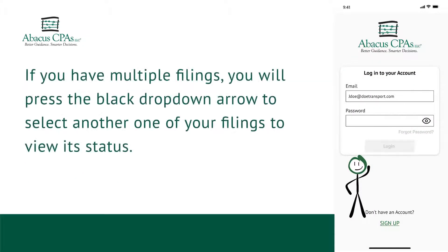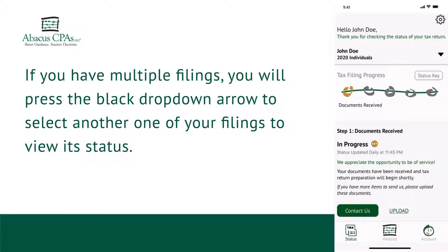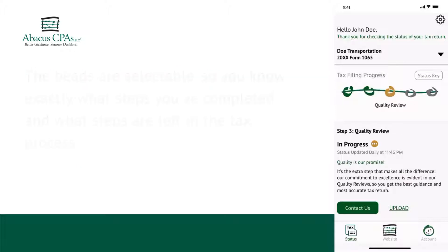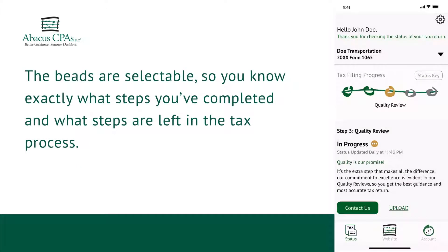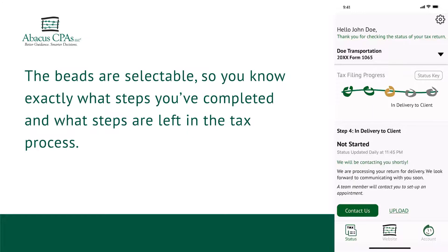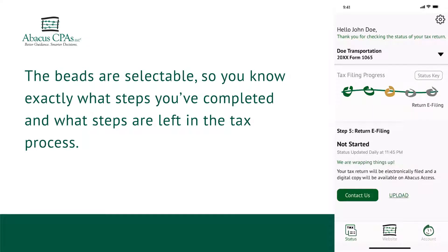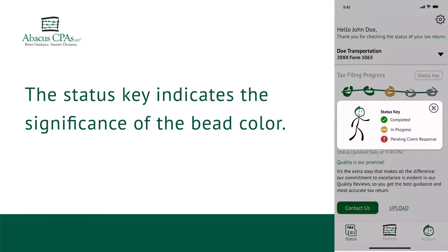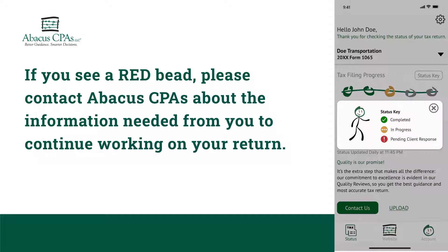If you have multiple filings, you will press the black drop-down arrow to select another one of your filings to view its status. The Beads are selectable, so you know exactly what steps you've completed and what steps are left in the tax process. The Status key indicates the significance of the bead color. If you see a red bead, please contact Abacus CPA's about the information needed from you to continue working on your return.